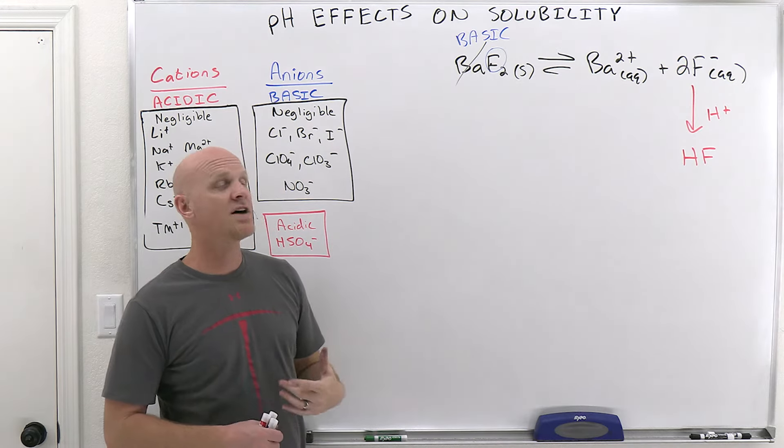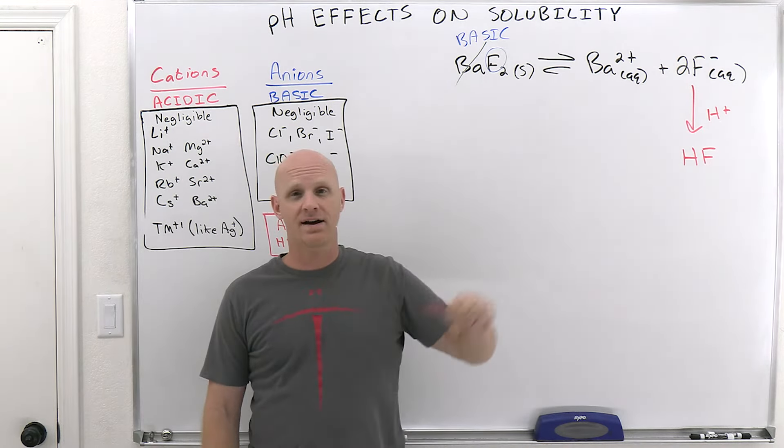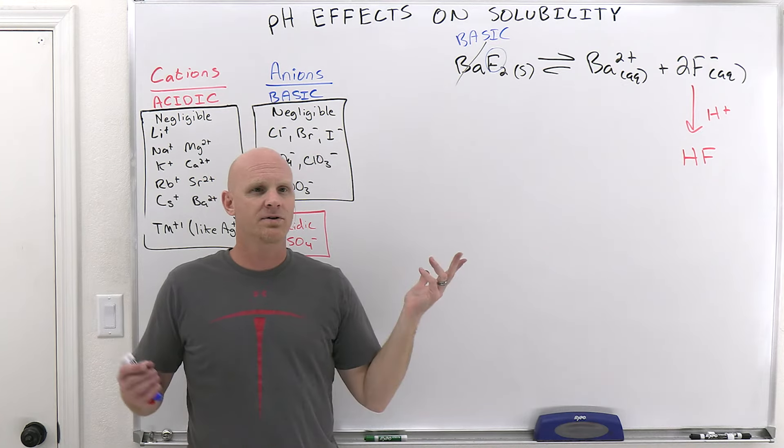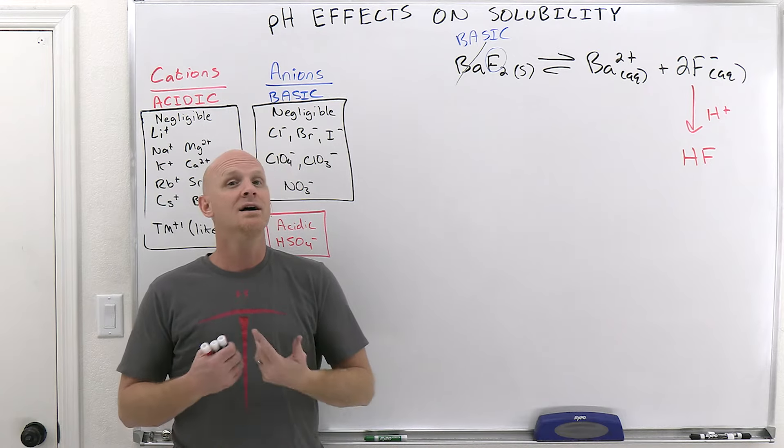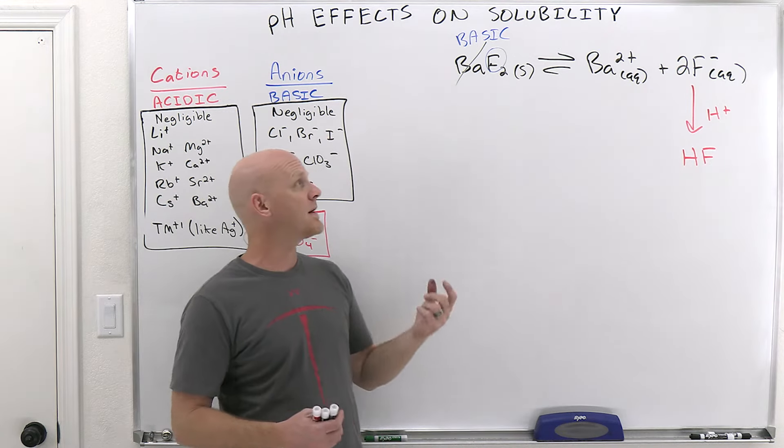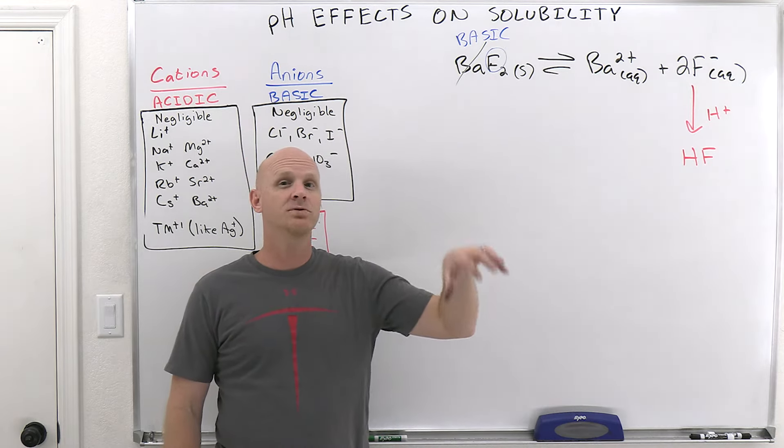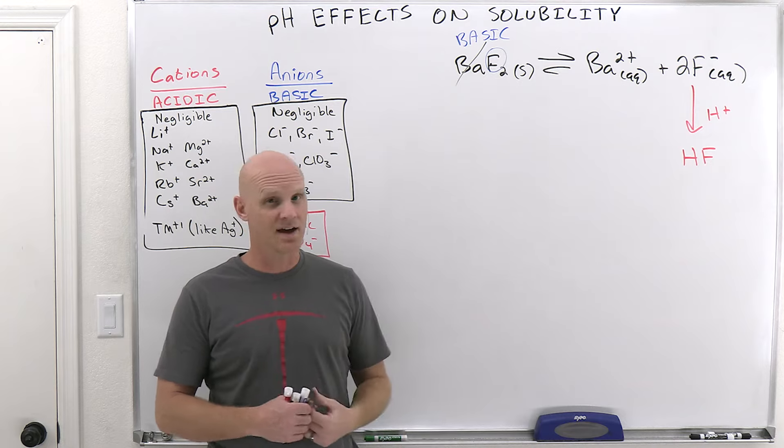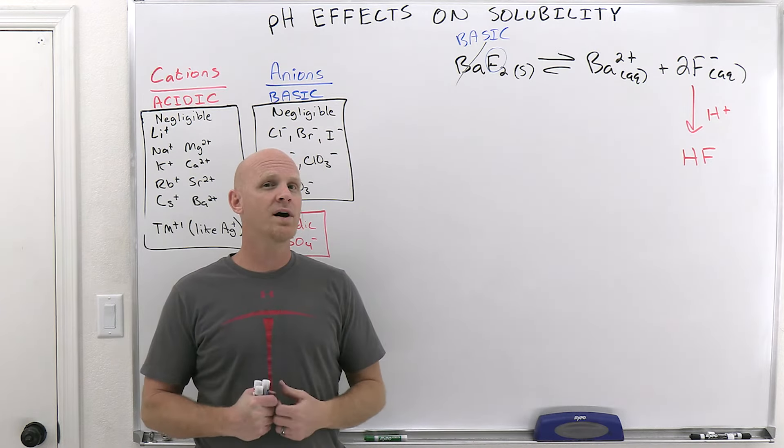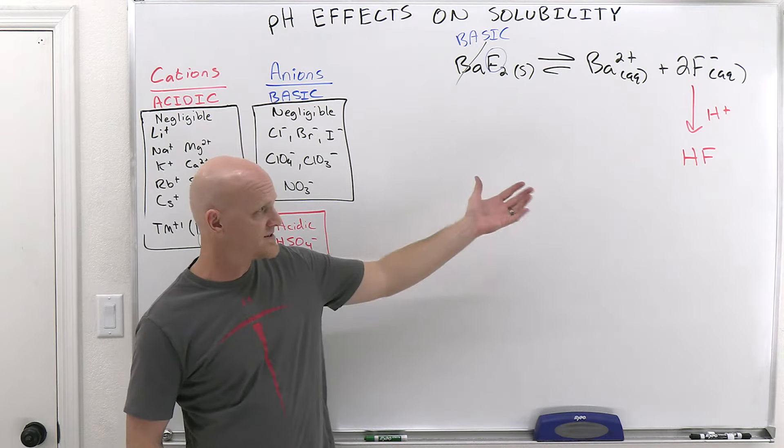But we also just learned that when you have acid present, and that could mean you add acid, or it could just mean that the solution is acidic, whether it's buffered at some low pH or who knows why. So if I were to put barium fluoride in pure water in one case, and then barium fluoride in an acidic solution where the pH is less than seven in a second case, more of the barium fluoride is going to dissolve in that acidic solution. And we can now see why.